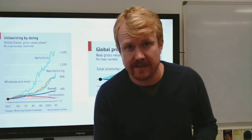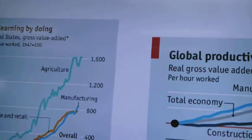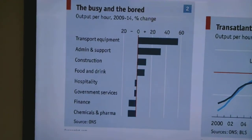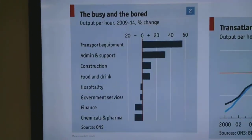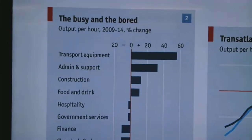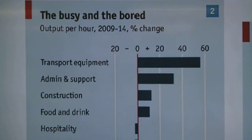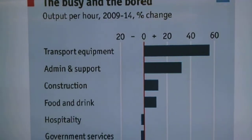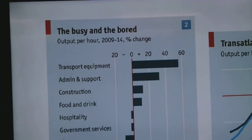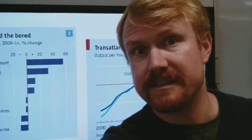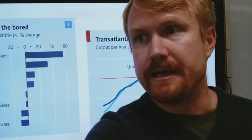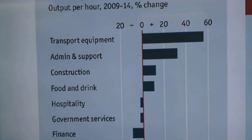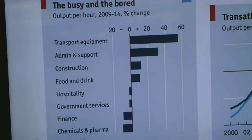Another article showed productivity growth in different sectors in the UK. In transport equipment and admin and support, there's been a big increase in productivity — a 60% or 30% increase — primarily due to those sectors investing in new modes of transit and technology. There's even mention in construction of laser-guided workbenches as an example of innovation.